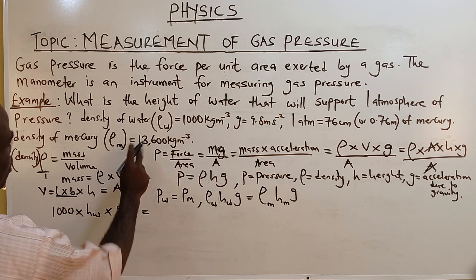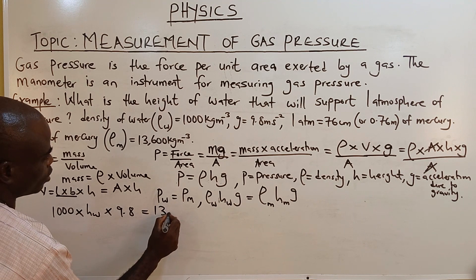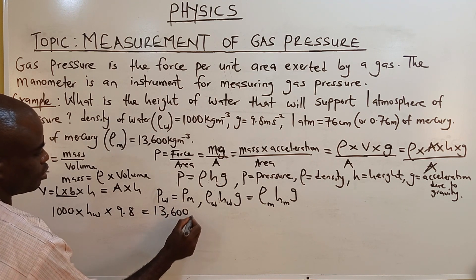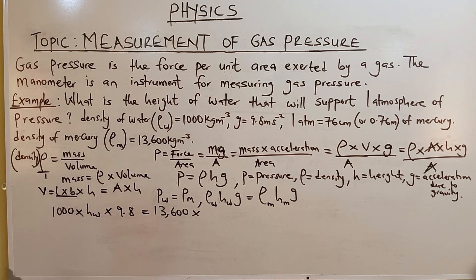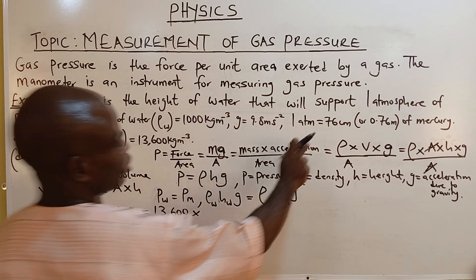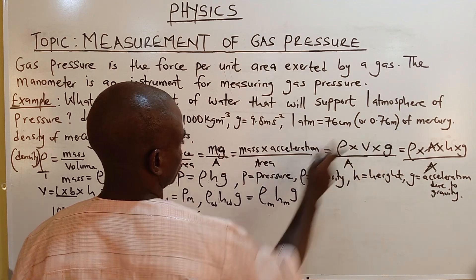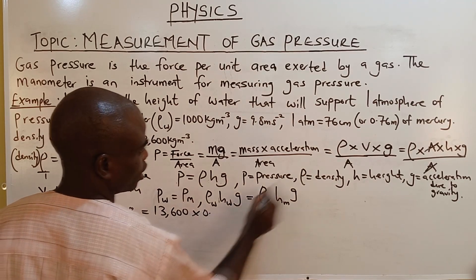What is density of the mercury? Density of the mercury is 13,600 times height of the mercury. One atmosphere is 0.76 meters.